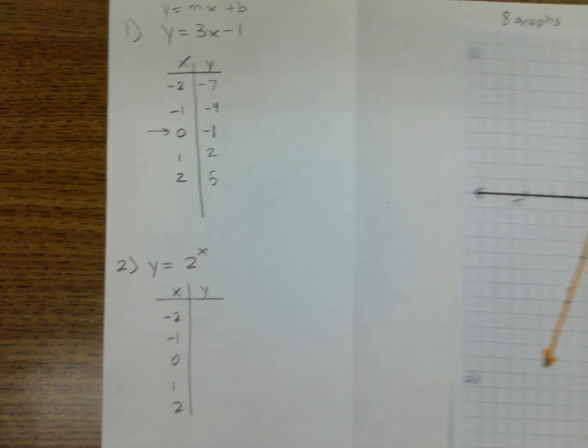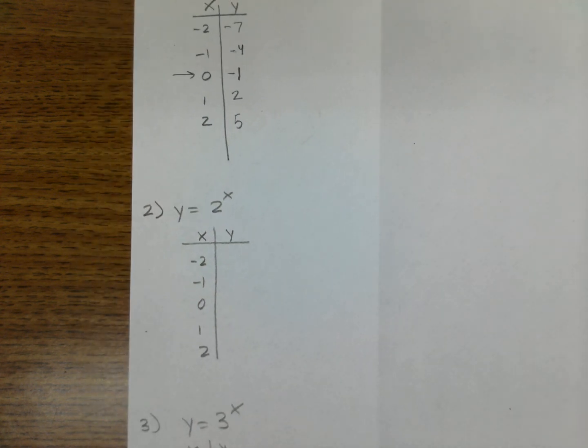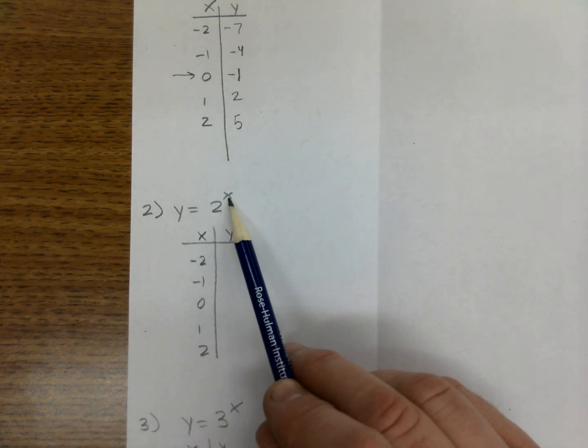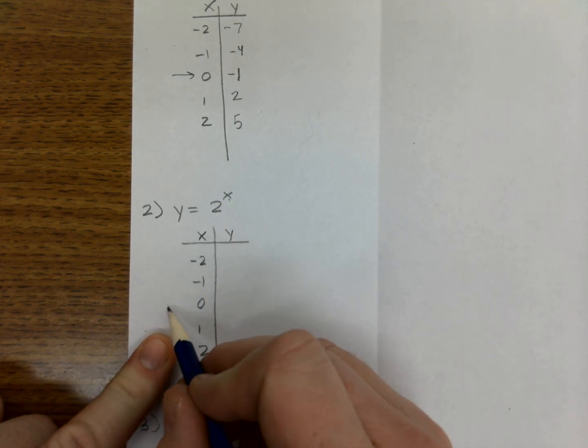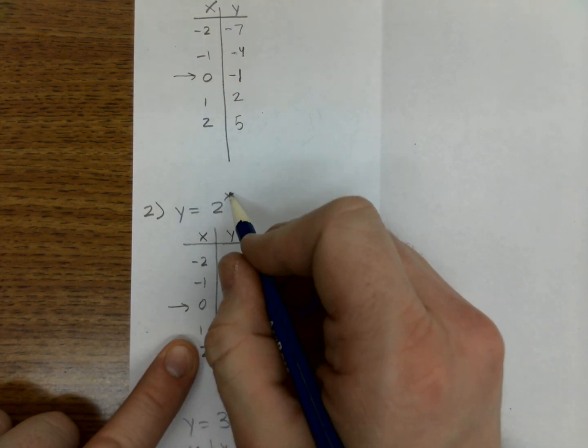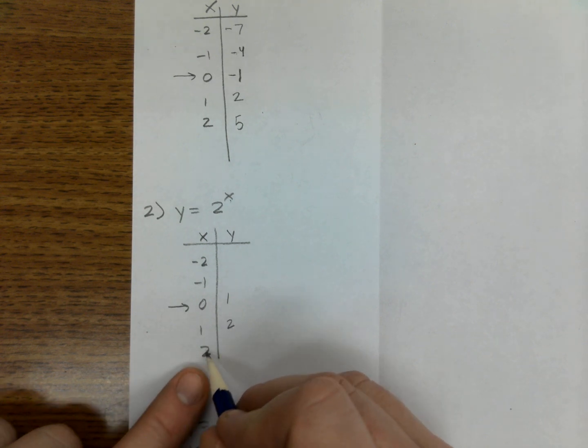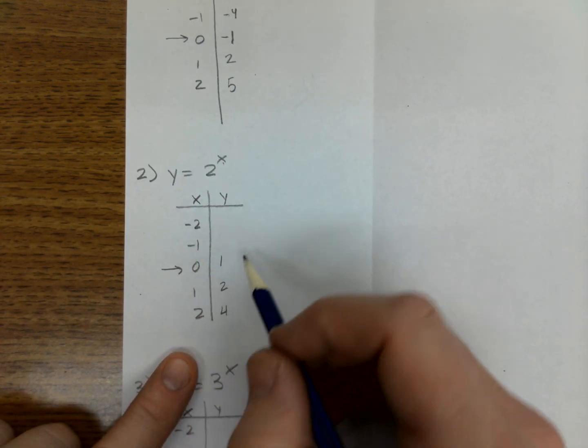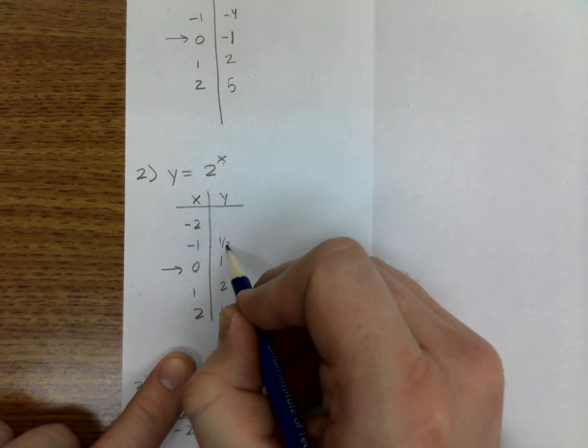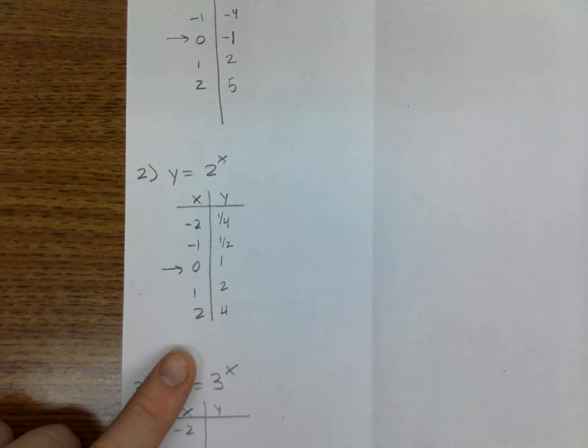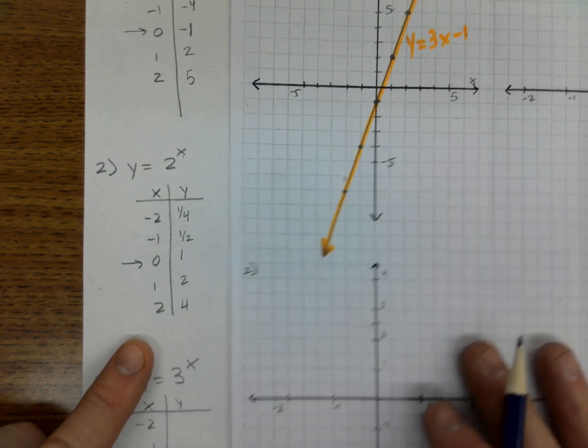All right, now we're going to move on to the new type of graph. This is the new material for the semester. It has exponents. So we're going to do the same kind of work with the exponents. 2 to the 0 is 1, 2 to the 1st is 2, 2 to the 2nd is 4. Doing the negatives are reciprocal: 2 to the negative 1 is 1 half, 2 to the negative 2 is 1 fourth.